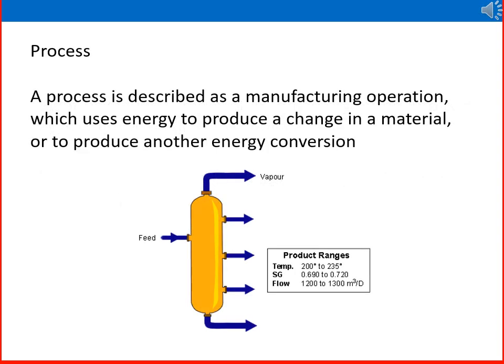A process is described as a manufacturing operation which uses energy to produce a change in a material or to produce another energy conversion. A picture is provided here to explain what a process is in a simplified way: a feed is given, various processes and reactions take place inside a vertical vessel or tower, and we get various outputs — that is simply a process.